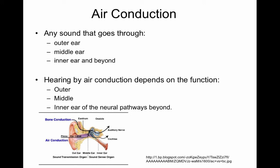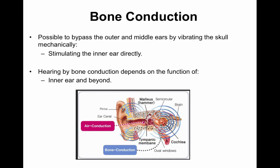To have normal air conduction scores, one must have a completely healthy outer, middle, and inner ear. Bone conduction bypasses the outer and middle ear, directly vibrates the skull, and stimulates the inner ear. Hearing by bone conduction depends on the function of the inner ear and beyond.